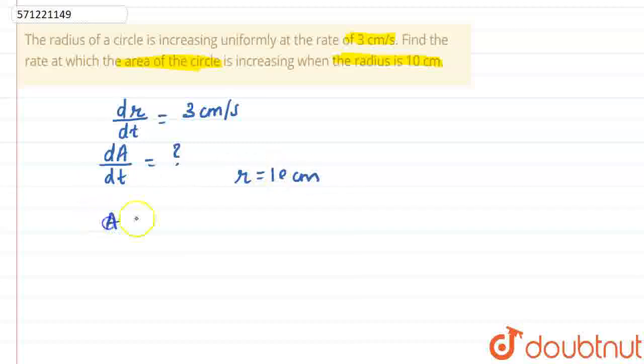Okay. We know that area of circle is πr², right. So, dA by dt equals d by dt of πr², right. So, dA by dt equals 2πr dr by dt